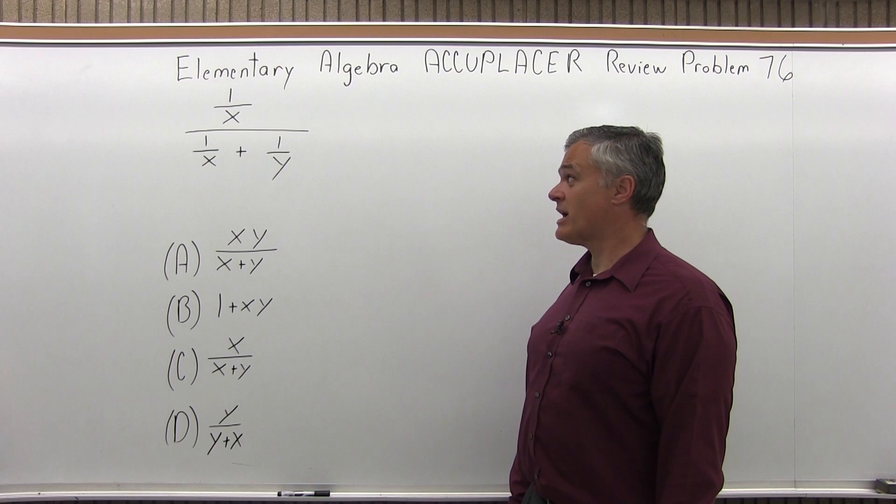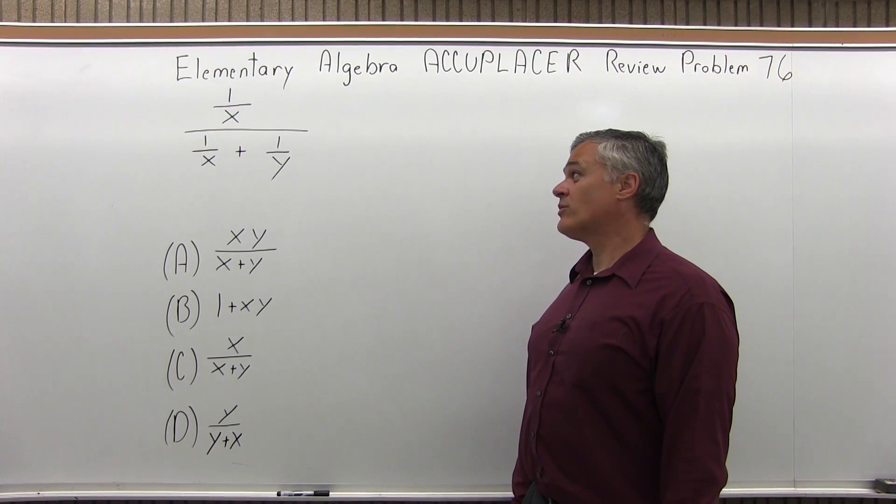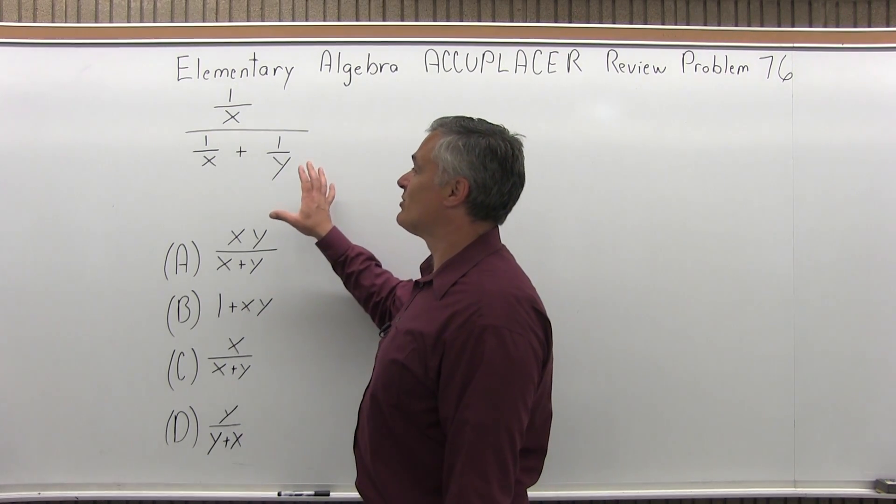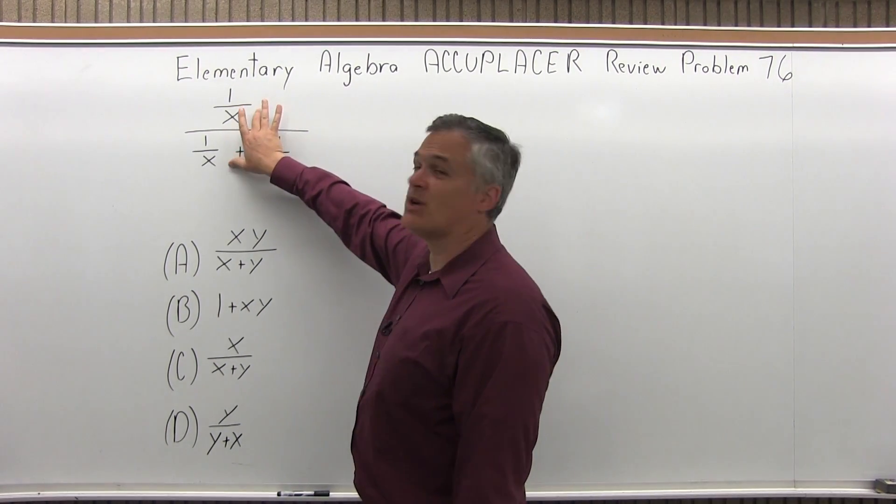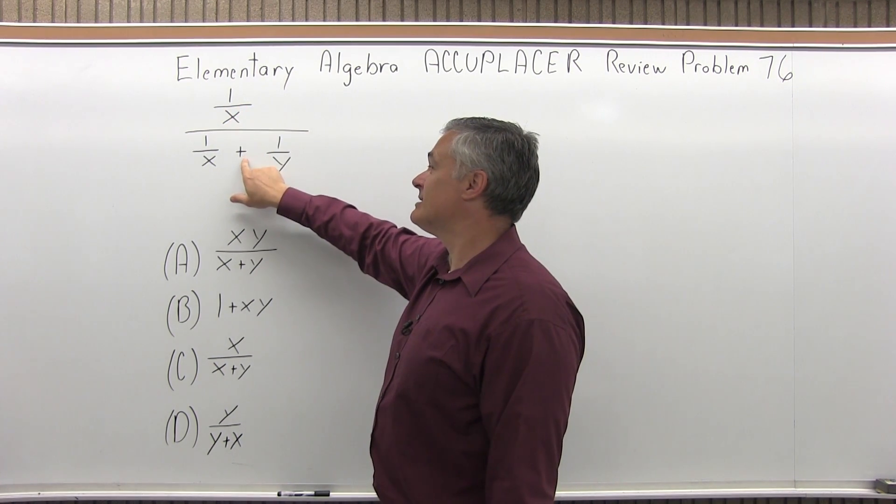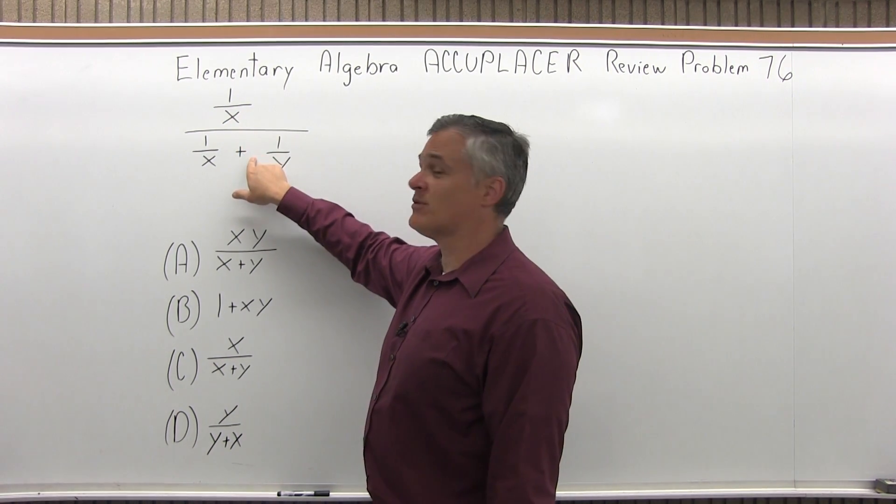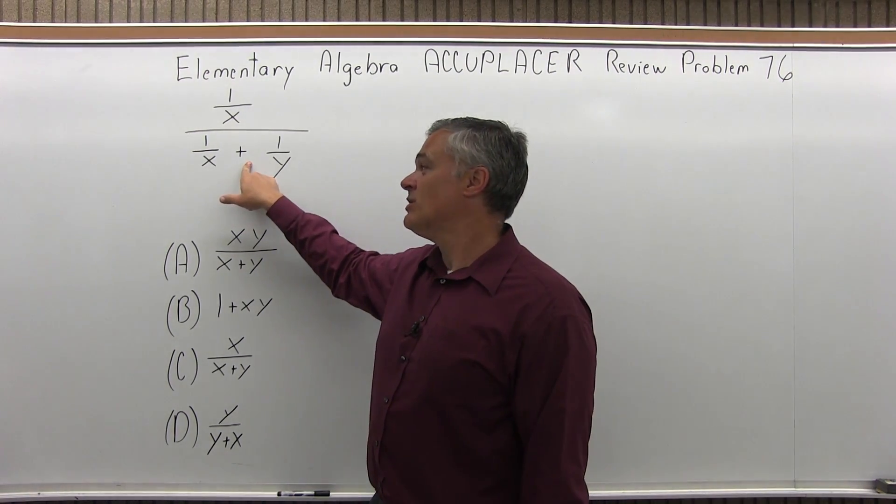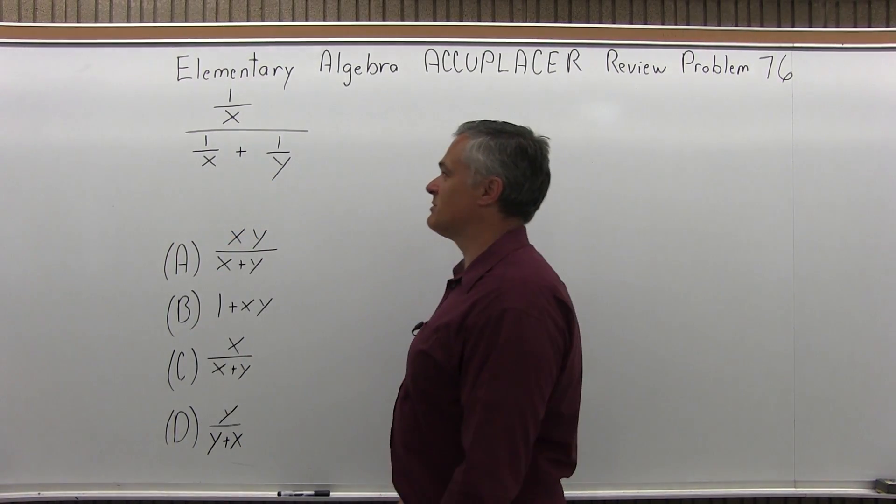We have 1 over x over 1 over x plus 1 over y, and what does that equal? If you're not familiar with the rules of algebra, you'd say, oh look, 1 over x on the top, 1 over x on the bottom, let's cancel them. You cannot do that. If it was a times in the denominator instead of a plus, you actually could, but because it's a plus, minus would be the same. You have to simplify it, and it's a much bigger process.